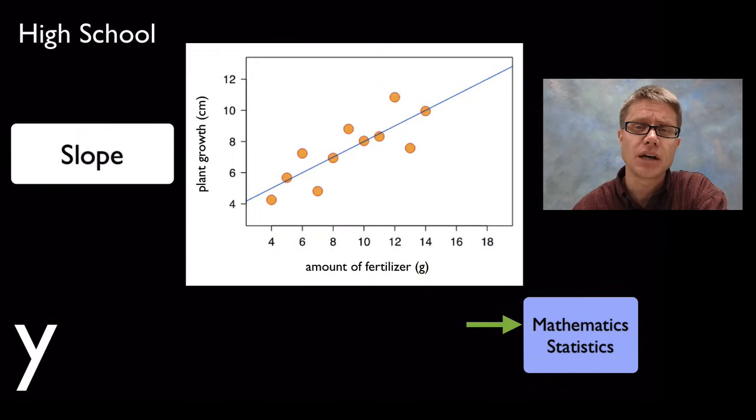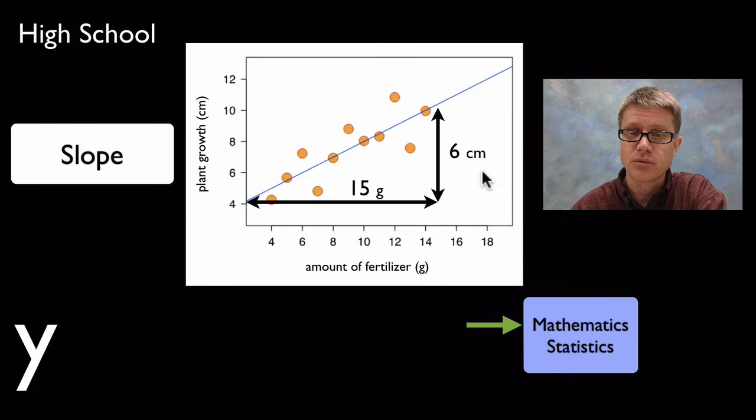As you move to high school you can really take a look at the mathematics and the statistics behind the data. A great example would be slope. Once we've looked at this correlation of the data I could simply calculate the slope of that line of fit. I could figure out the rise over the run and I could figure out a y value of 0.4 centimeters per gram. Slope is incredibly important, especially in a line graph when we're looking at change over time.